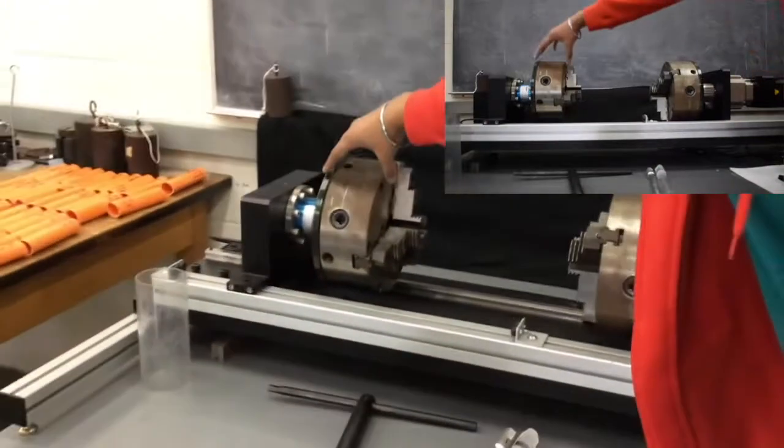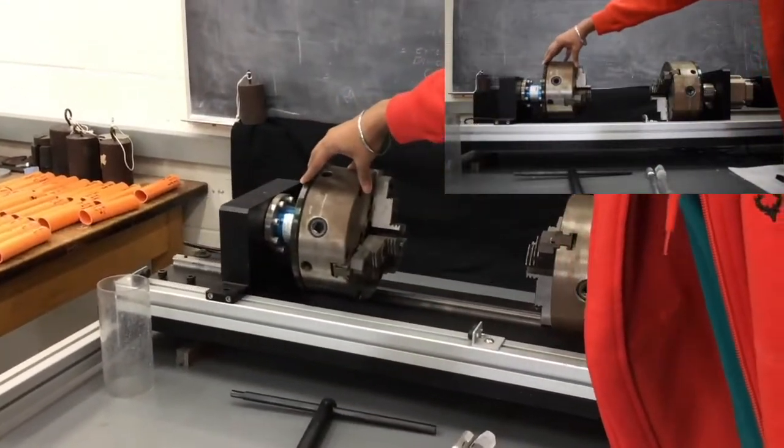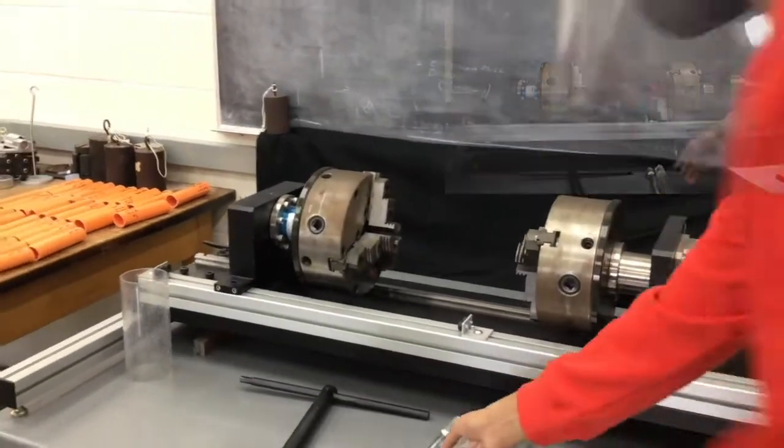So that's the actual torsion head. That's the thing that twists and that is the tail stock that can slide but it cannot twist, right? And we'll talk about why it's important that it slides later.